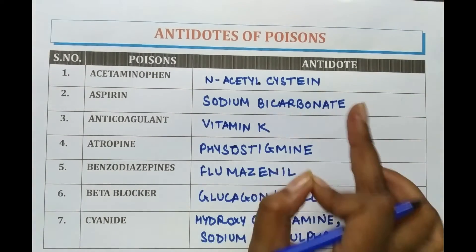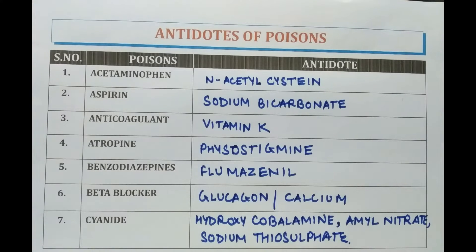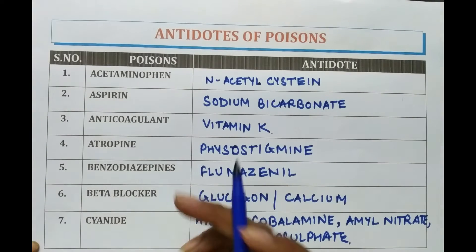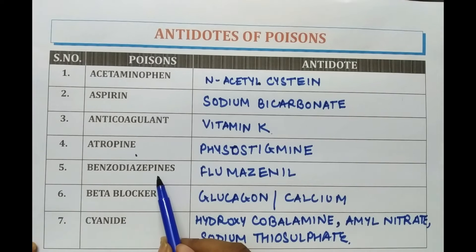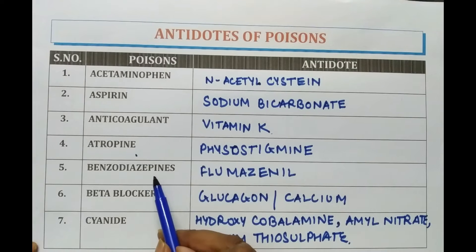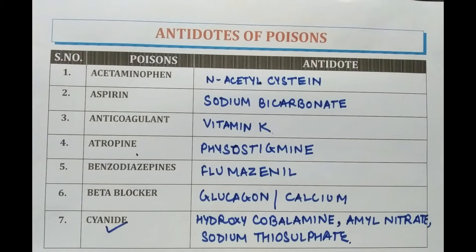To revise: In acetaminophen, N-acetyl cysteine is used. For aspirin poisoning, sodium bicarbonate is given. For anticoagulant, vitamin K is used. For Atropine, Physostigmine is given. For Benzodiazepine, Flumazenil is given. For beta blocker, glucagon or calcium is the antidote. For cyanide poisoning, hydroxycobalamin, amyl nitrate, or sodium thiosulfate is given.